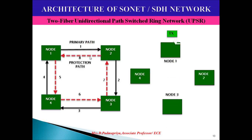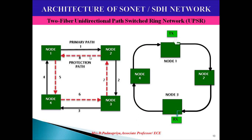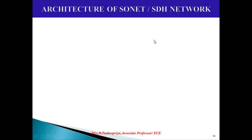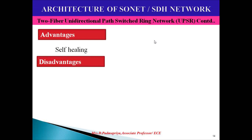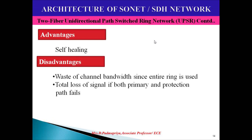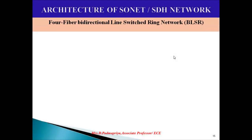The same data flows in both directions simultaneously. The advantage of the two-fiber unidirectional path switch ring is self-healing. However, there are disadvantages: the entire perimeter of the ring is used, resulting in waste of channel bandwidth. Additionally, if both the primary and protection paths fail, then the signal is totally lost. To overcome this, we move to the four-fiber bidirectional line switch ring network, called BLSR.